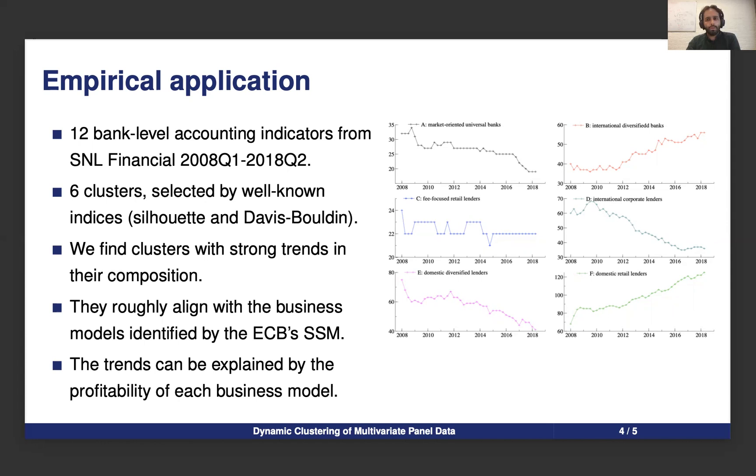Looking at the banks that compose each of these clusters, we see that some clusters, for instance cluster F, is composed mostly of domestic retail lenders. Cluster B on the other hand is composed mostly of international diversified banks. That means we can interpret these clusters as business models and the transitions between clusters as changes in business models.